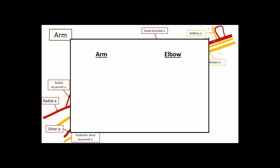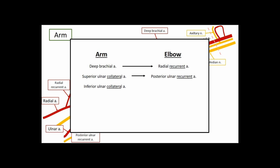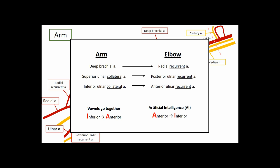Pairing arteries with their elbow counterparts: the deep brachial artery meets the radial recurrent artery. The superior ulnar collateral artery meets the posterior ulnar recurrent artery. The inferior ulnar collateral meets the anterior ulnar recurrent artery. A helpful mnemonic: vowels go together — inferior and anterior both start with vowels — or simply 'AI' (anterior goes with inferior).